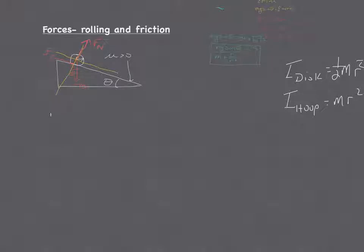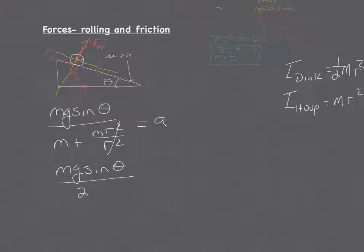So in that equation, mg sine theta, we're just going to replace I with the mR squared. And you can see right on the bottom, the R squares cancel out. You get mg sine of theta all over m plus m, which is 2m, equals a. And the m's cancel.